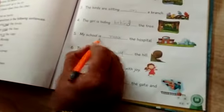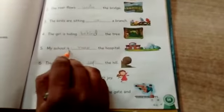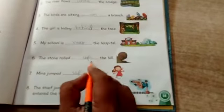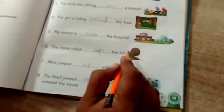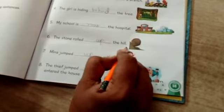My school is near the hospital. The stone rolled, dash the hill. Where is it? It is up. So up the hill.